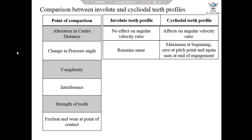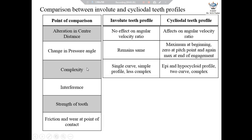The third point is complexity of tooth profile. Involute teeth profile is formed by a single curve and hence it is simple in its construction. However, cycloidal teeth profile consists of epicycloid and hypocycloid curves, and hence it is complex in its construction and even difficult to manufacture.